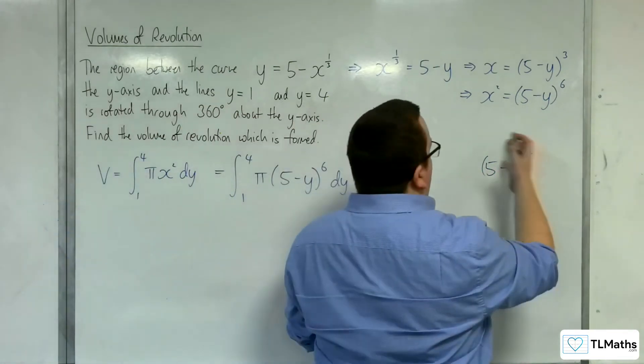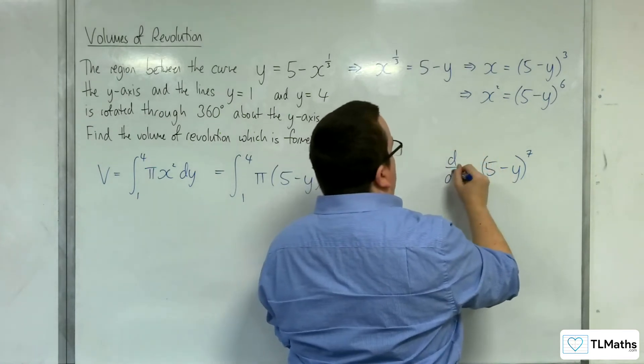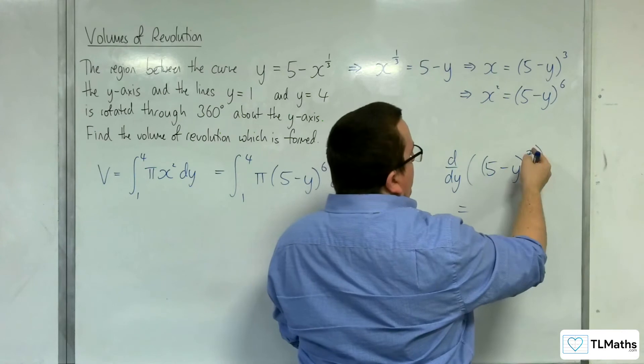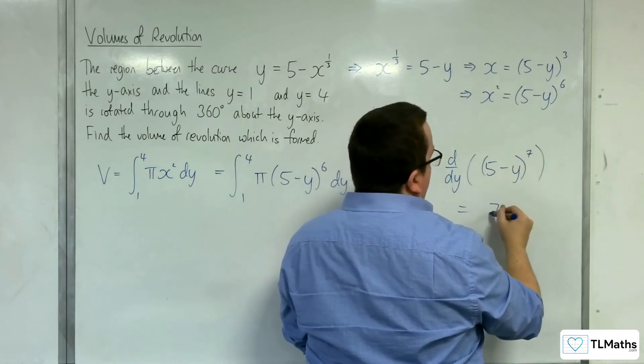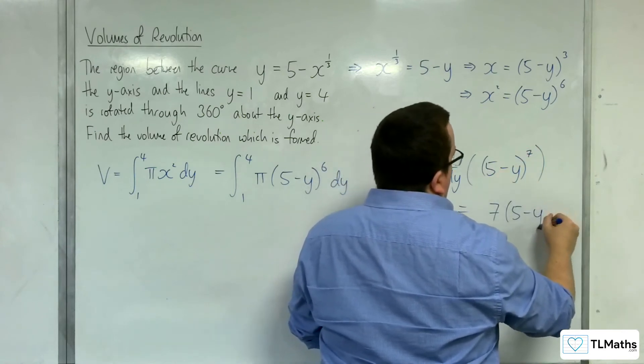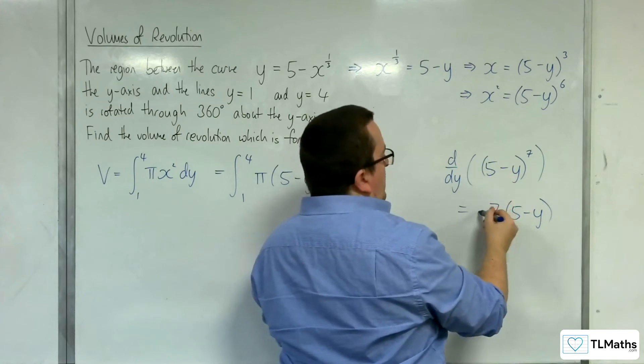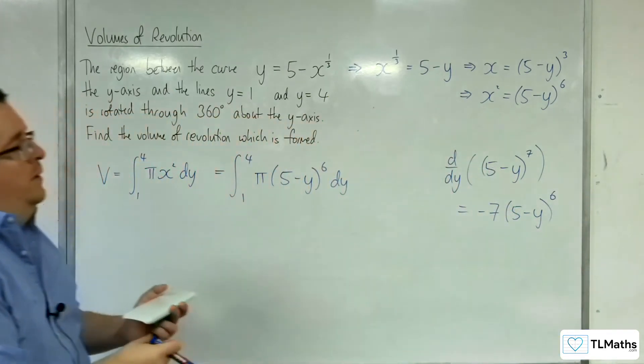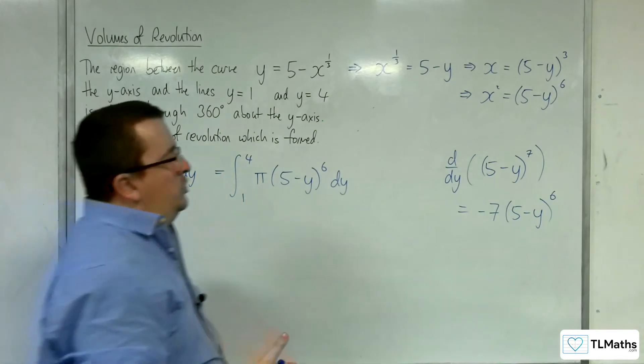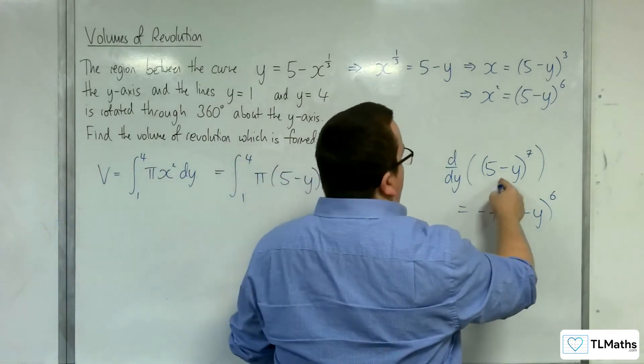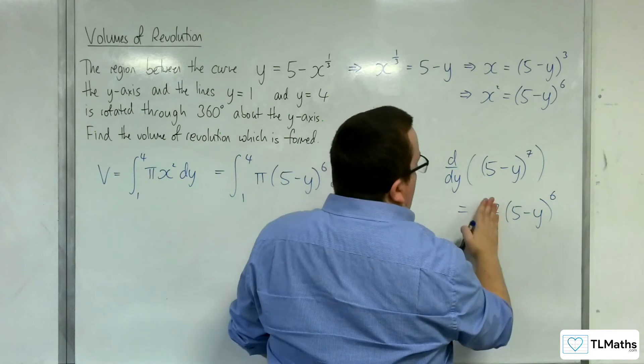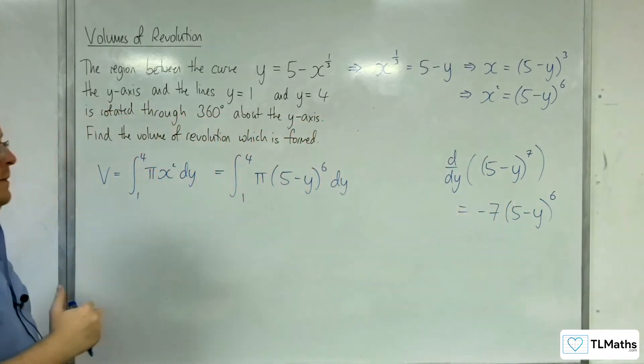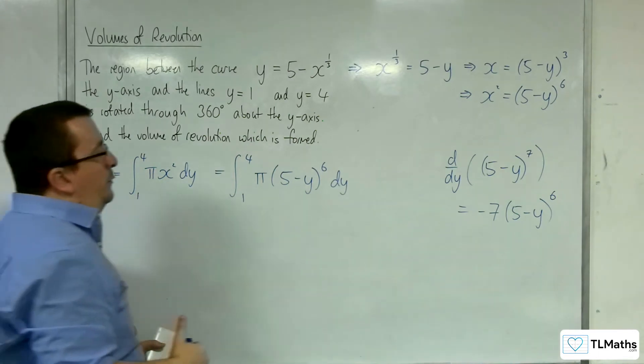Now, if I differentiate this with respect to y, I'm going to get the 7 coming down to the front. The derivative of the inside is minus 1 coming outside, and 1 coming off the power. So actually, if that differentiates to that, then this must integrate to minus 1 seventh of that. Okay, so that's the way that I think through those.